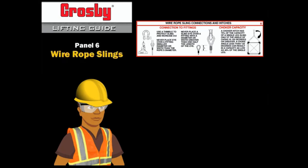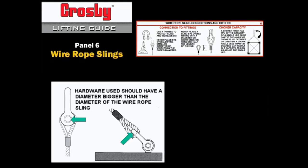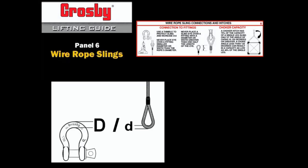The capacities of wire rope slings are based on using the proper size hardware with the wire rope slings. The hardware used should have a diameter bigger than the diameter of the wire rope sling. When comparing the diameter of the hardware to the diameter of the wire rope sling, this is called the D to D ratio.